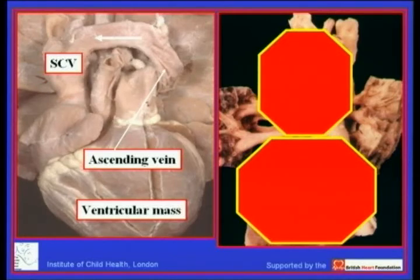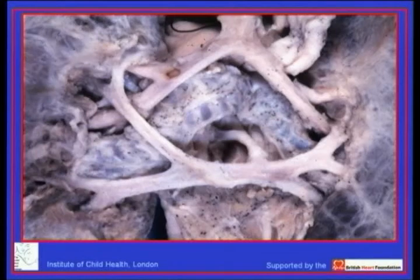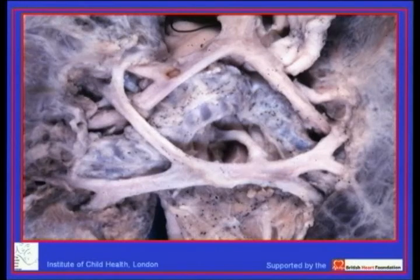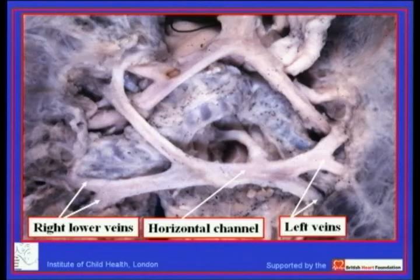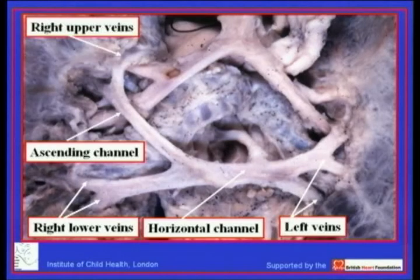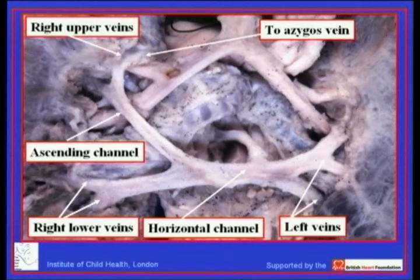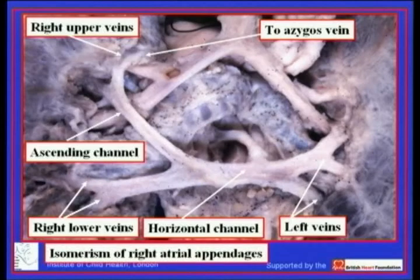This snowman pattern is well recognized on the chest radiograph, though the chest radiograph itself may be becoming obsolete. One important variant is when the ascending channel runs up the right paravertebral gutter rather than the left. After the Taussig maneuver, we see the left veins running across beneath the heart, picking up the right lower veins, then ascending the right paravertebral gutter to pick up the right upper veins and opening into the azygous vein. In this case, there was also isomerism of the right atrial appendages.